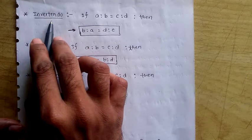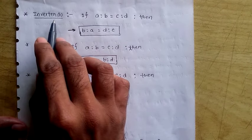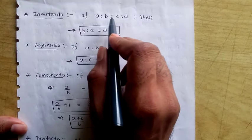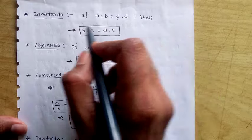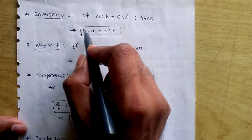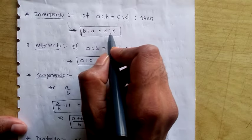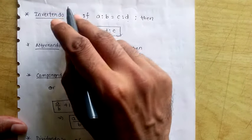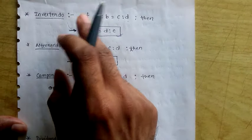This is Invertendo. If a is to b equals to c is to d, then what we do is apply the invertendo property — that means just invert it — so b/a equals to d/c. This property is called Invertendo, or we can say it is the inverse of the ratio.